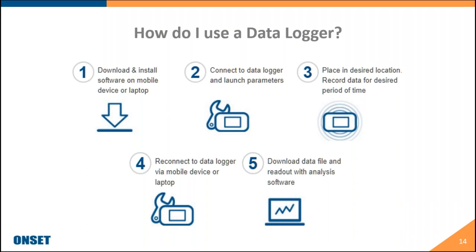Our data loggers have a variety of logging intervals — they can log as fast as once a second or as slow as once every 18 hours, and you can choose any variable in between. You can set start and stop times, and configure what happens when memory fills: either wrap mode, which overwrites the oldest data, or stop when the memory fills up.